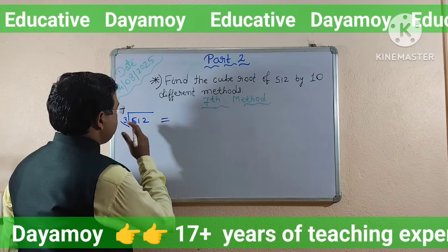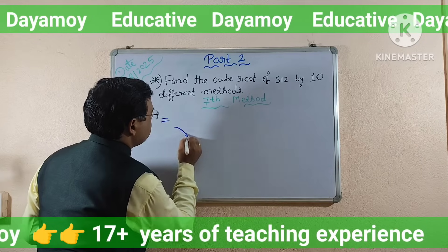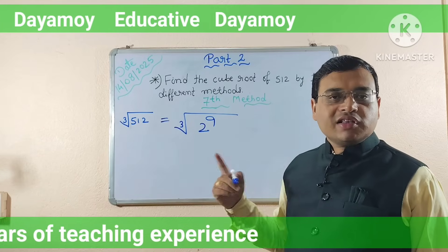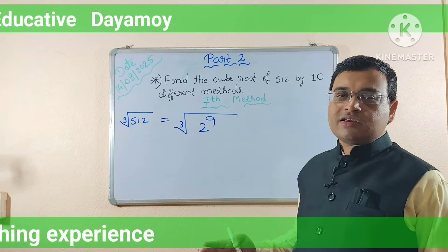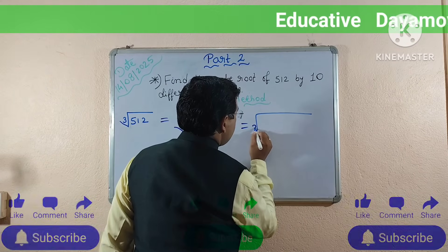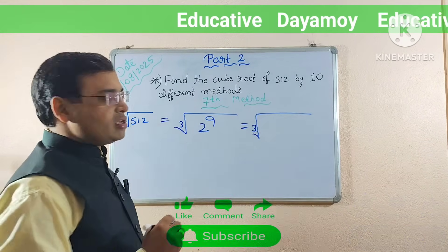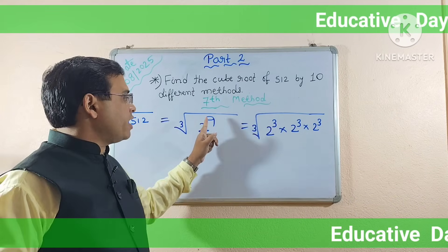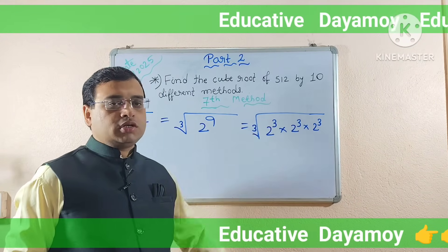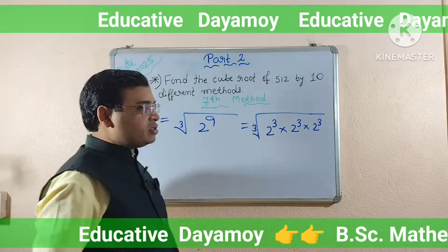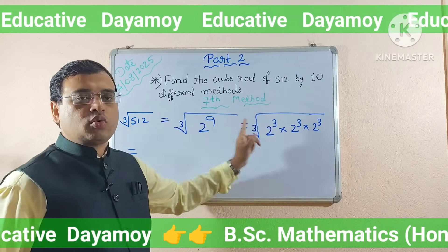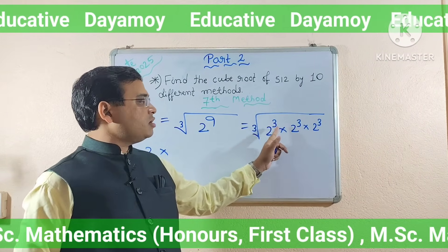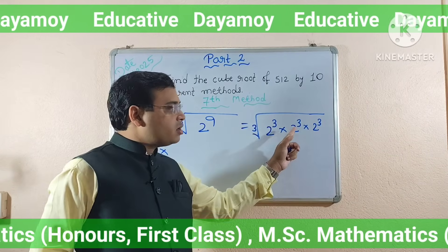In the seventh method, I write cube root of 512, then write directly cube root of 2 to the power 9. You can verify 512 equals 2 to the power 9 by expanding. Now I break down 2 to the power 9 as 2 to the power 3, into 2 to the power 3, into 2 to the power 3. As I am doing cube root here, out of three 2s in each group, one 2 will come out. From the first group, one 2 comes out; from the second, one 2 comes out; from the third group, one 2 also comes out.